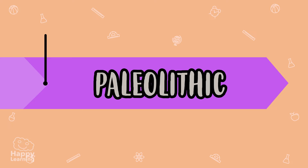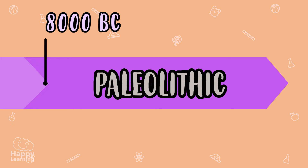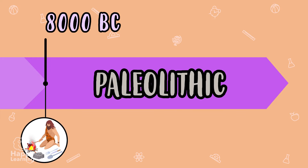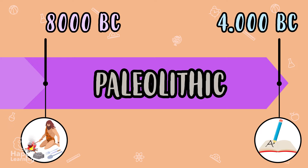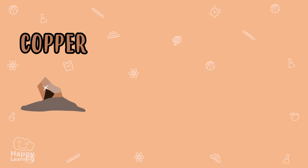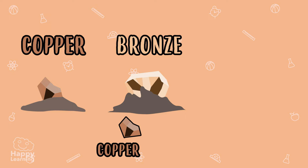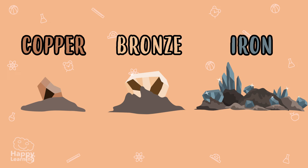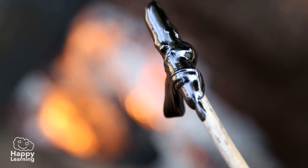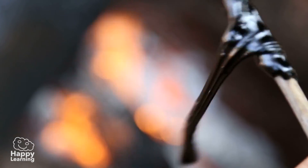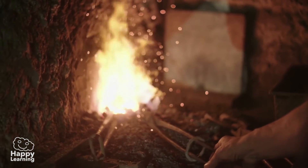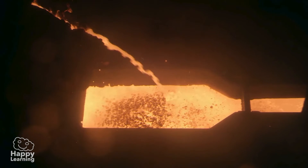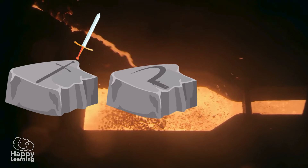The Metal Ages commenced approximately 6,500 years BC and finished when the first written language was born. The first metal which was used was copper, then bronze — which is a mixture of copper and tin — and finally iron, which is a much more abundant mineral and therefore easier to find in nature. In order to mould these metals, they were melted at extremely high temperatures and transformed into the desired shape. This is how utensils like tools, weapons, and decorations were made.